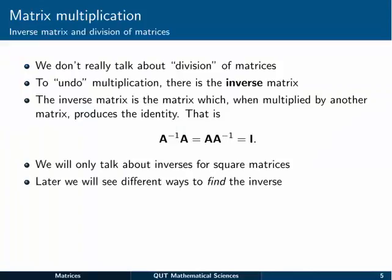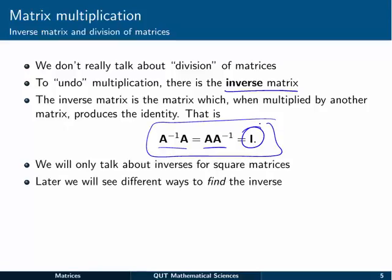So to finish off this section on matrix multiplication: multiplication normally goes together with division, and we don't really talk about division of matrices. The operation to undo multiplication is to use an inverse matrix. The inverse matrix is the matrix which, when you multiply it by another matrix, produces the identity matrix. So A inverse times A equals A times A inverse equals the identity of the appropriate size. We'll only talk about inverses for square matrices. Later we'll look at how to find them and some of the uses, but just for now, that's the property we talk about instead of division.